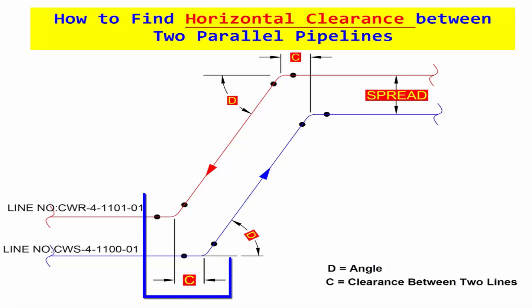At the time of erection, we need to follow the same spread distance in rolling area also. So we need to calculate horizontal distance between two pipelines.